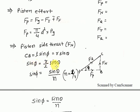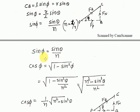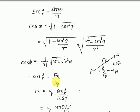Therefore, sin φ = r/l × sin θ = sin θ / n, where n is the obliquity ratio defined as n = l/r (connecting rod length upon crank radius). This is a very important equation. Then cos φ = (1/n) × √(n² − sin²θ).